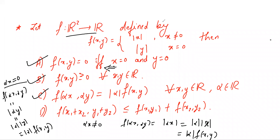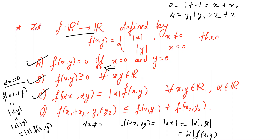Consider writing 0 as 1 + (−1), so x1 = 1 and x2 = −1. Let y1 = 2 and y2 = 2, so y1 + y2 = 4. Now f(0, 4) = mod y = 4 since x = 0. f(1, 2) = 1 since x ≠ 0. f(−1, 2) = 1 since −1 ≠ 0. We observe that 4 is not ≤ 1 + 1 = 2. Hence option D is wrong.